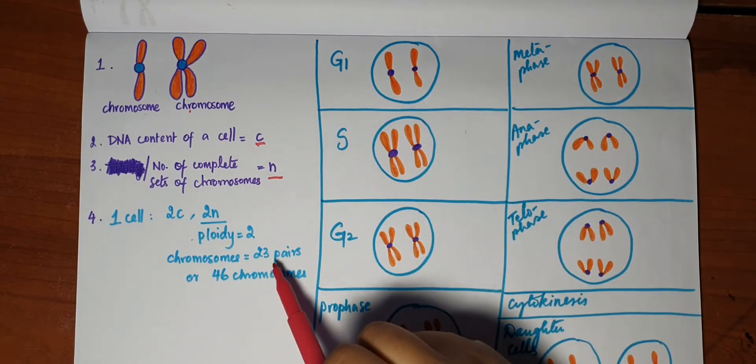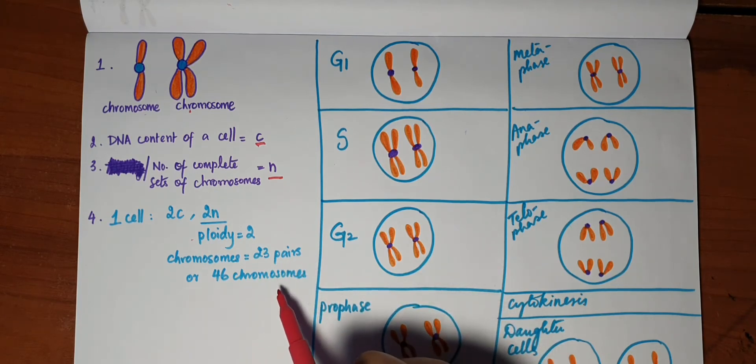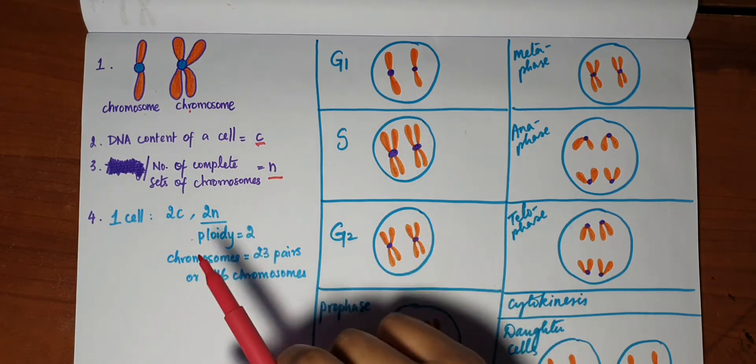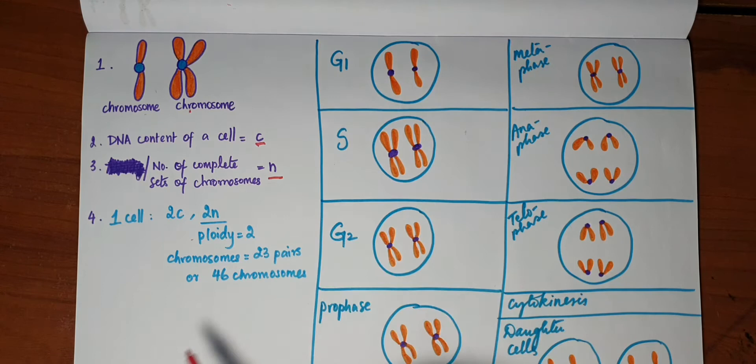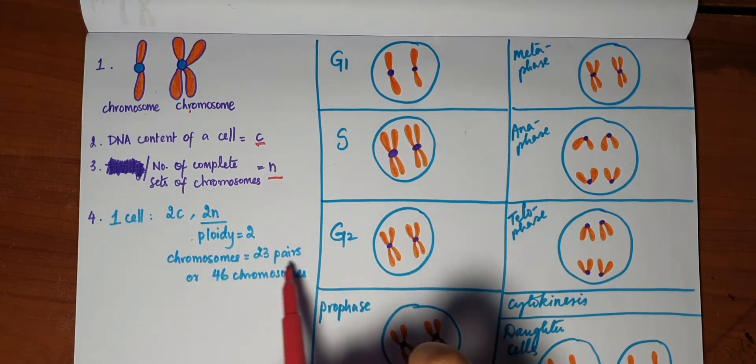Now we have 23 pairs of chromosomes in each cell, meaning we have 46 chromosomes and we represent this as 2n. 2n is the number of complete sets of chromosomes, representing our 46 chromosomes or 23 pairs of chromosomes.